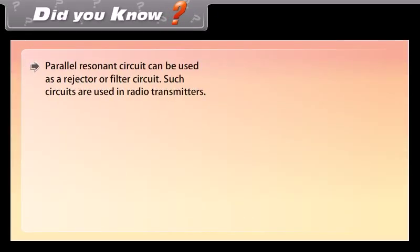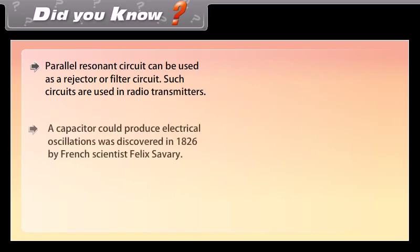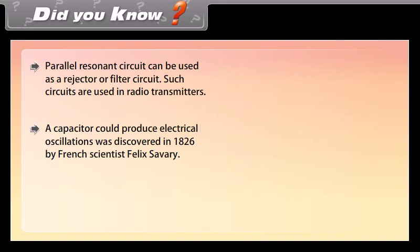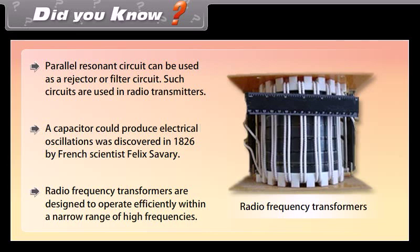Did you know? A parallel resonant circuit can be used as a rejector or filter circuit; such circuits are used in radio transmitters. The fact that a capacitor could produce electrical oscillations was discovered in 1826 by French scientist Felix Savary. Radio frequency transformers are designed to operate efficiently within a narrow range of high frequencies.